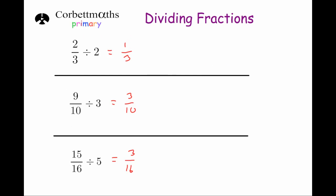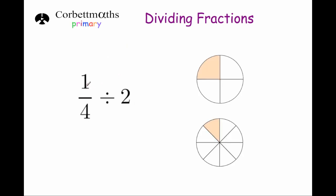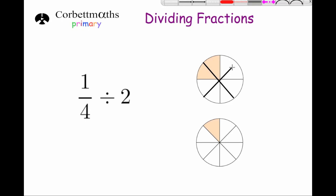Now we're going to look at some that are a little bit more complicated — how to divide a fraction by a whole number where the numerator isn't divisible by the number you're dividing by. Let's imagine this visually first. Here we've got a quarter and we're dividing it by 2. The circle is in quarters at the minute. If we were to divide it into eighths, we now have 2 eighths shaded in. And if we divide that by 2, we get 1 eighth. So a quarter divided by 2 is 1 eighth.